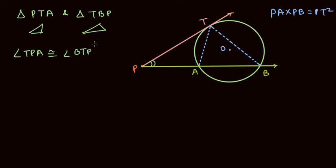Angle BTP. So angle TPA is congruent with angle BPT. And the reason for this is that this is a common angle. What's the second element that I can find which will prove that the triangles are similar?